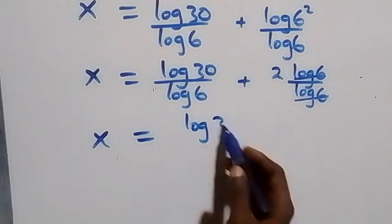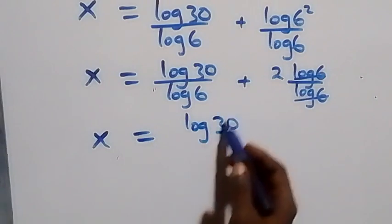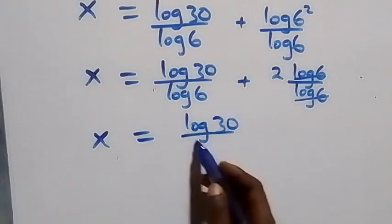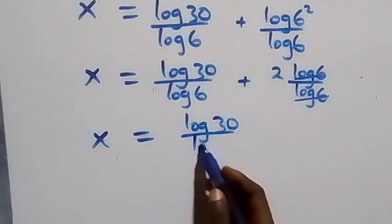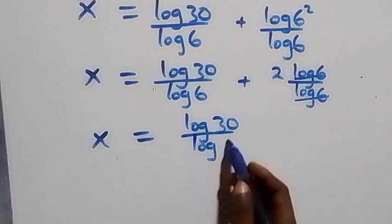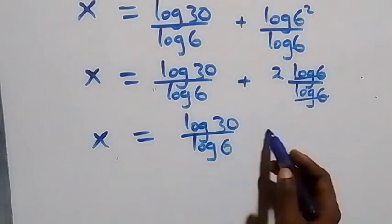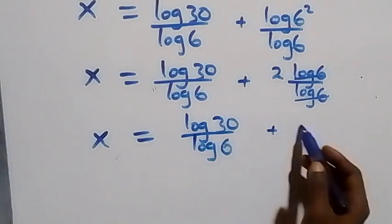And we have x now equals log 30 over log 6, plus 2.